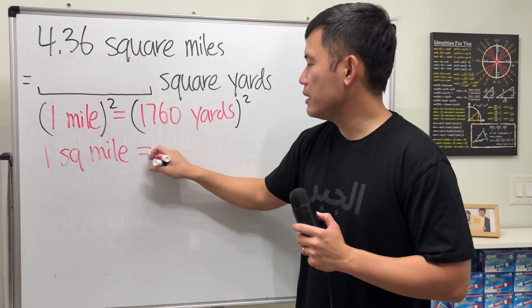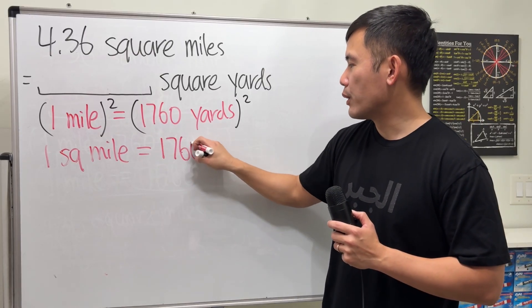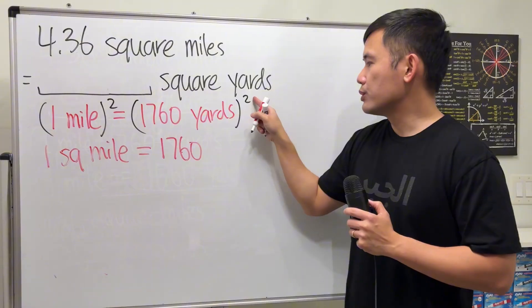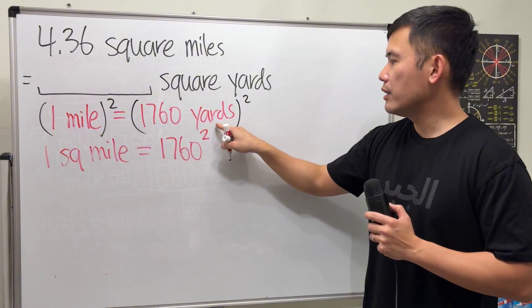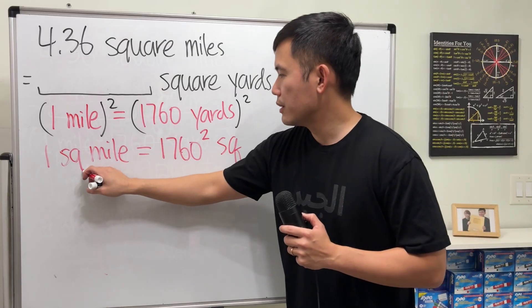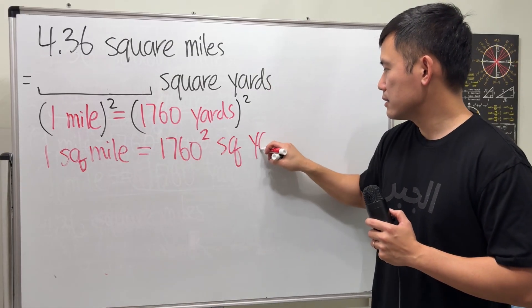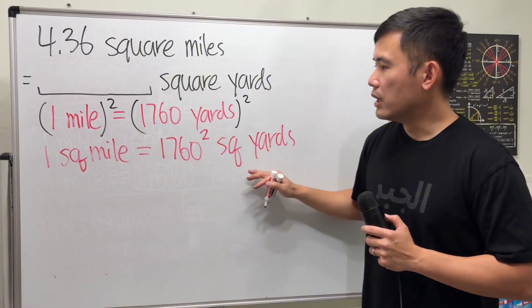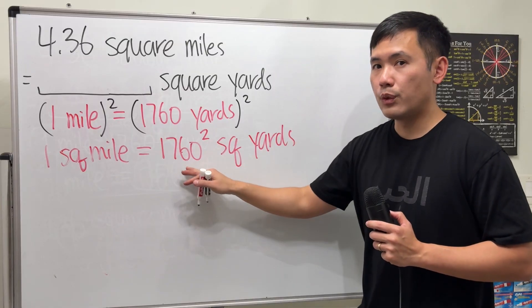And this will be whatever this is. I'm going to just use a calculator later. So I will do this to the second power, or yard square. I'm just going to write squared yards. So this is actually the numbers that we are going to use, this square.